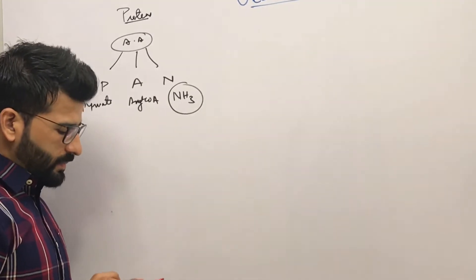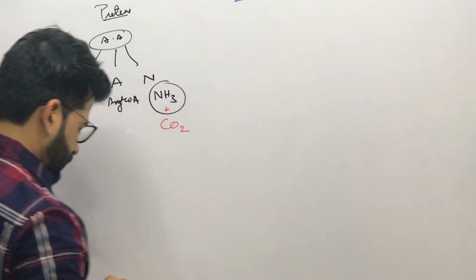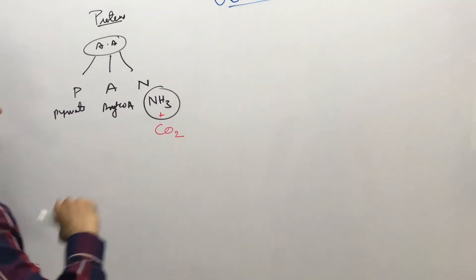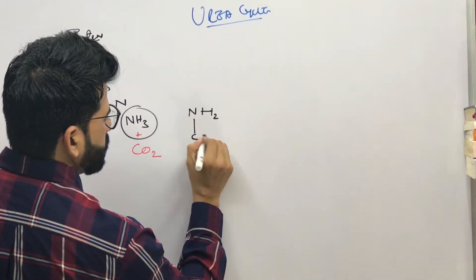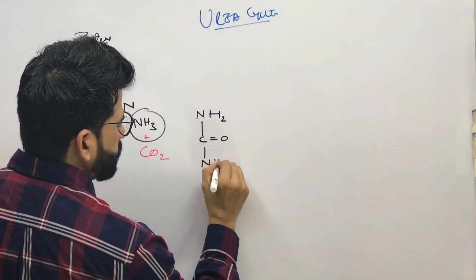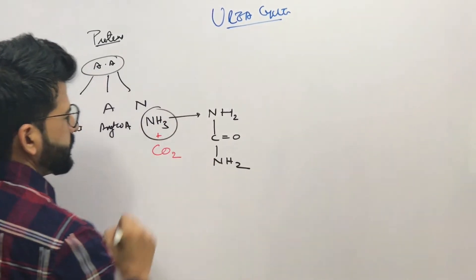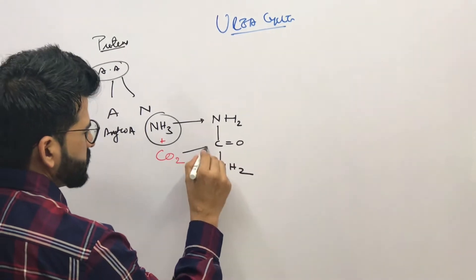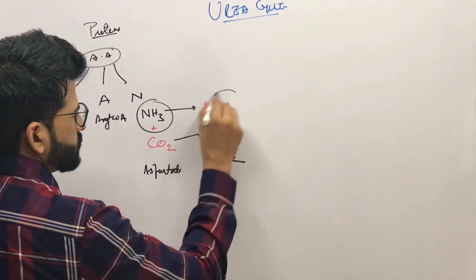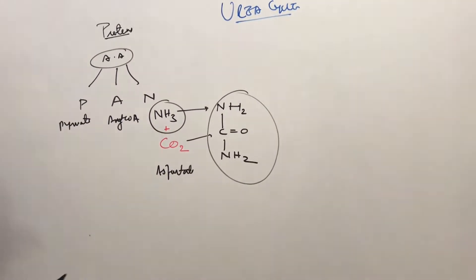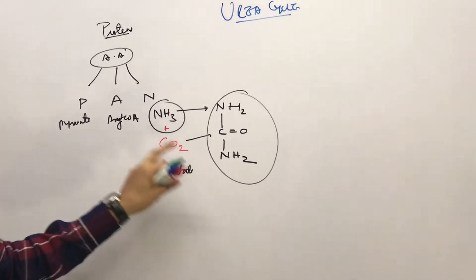What happens is this NH3 combines with CO2 and urea is formed. In the urea formula, this NH2 comes from NH3, the carbonyl carbon comes from CO2, and the other NH2 comes from aspartate. This is the formula for urea.